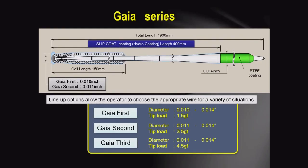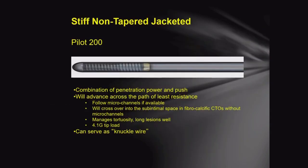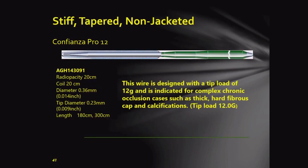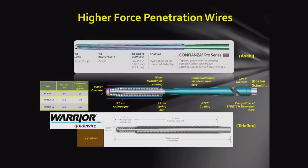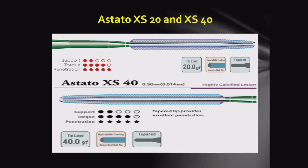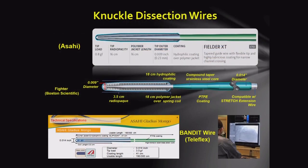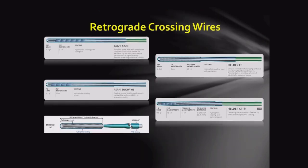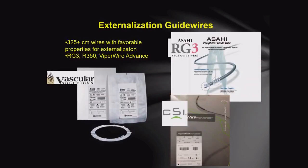The Gaia series is used when you know the course of the CTO. Pilot 200 with a jacketed wire is used when you want to knuckle; stiff tapered non-jacketed wires like Confianza Pro 12 are for higher penetration, as are Hornet, AXT, or X20/X40. For knuckling in long CTOs, use Asahi Fielder XT or Pilot 100–200. For retrograde crossing, three wires are used: Asahi Sion, Suoh, or Fielder XTR. For externalization, you need a long wire like the 350 cm RG3.